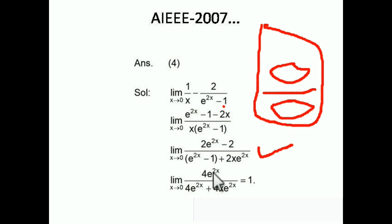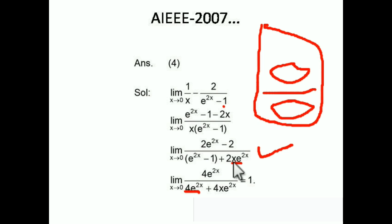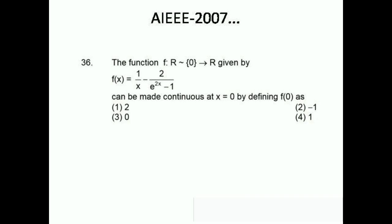Differentiating again: the numerator becomes 4e^(2x), and the denominator becomes 4e^(2x) + 4x·e^(2x). Now putting the limit x → 0: the numerator gives 4·e^0 = 4, and the denominator gives 4 + 0 = 4. So 4/4 = 1. We had to apply L'Hôpital's rule twice. The answer is 1, which is option number 4.